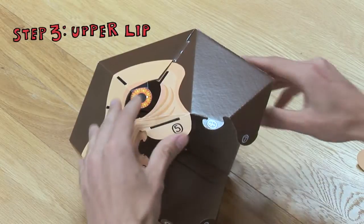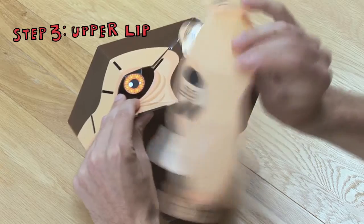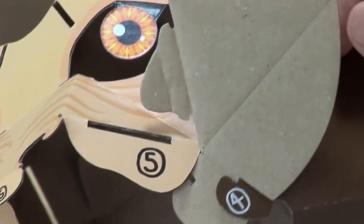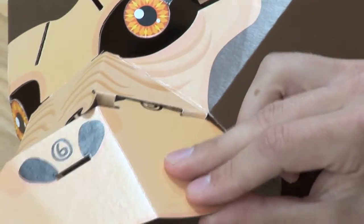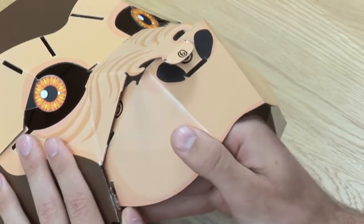On the front of the mask, push tab 5 inwards so it's out of the way, then take the upper lip piece and put tab 4 into place over tab 4 on the mask. Insert tab 5 partially into its slot, then making sure the nose stays on the outside, put tab 4 into place on the other side.